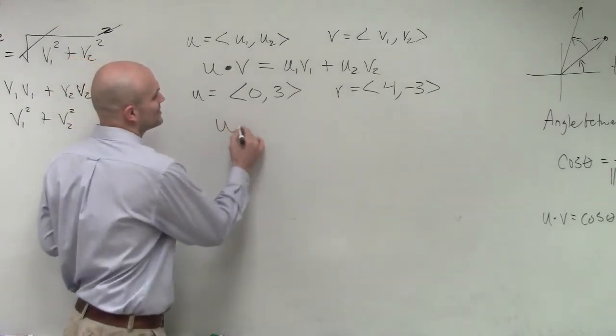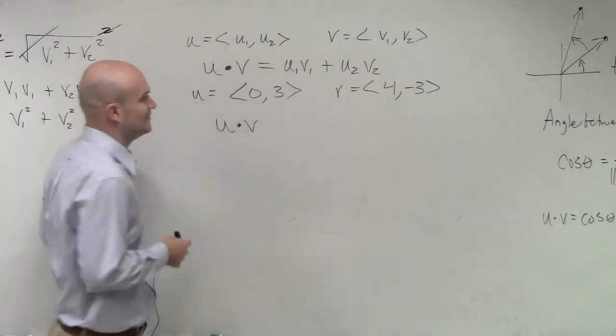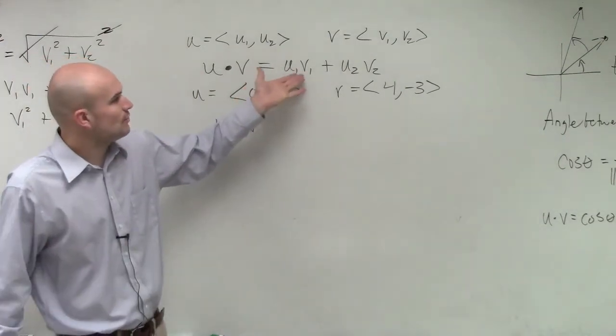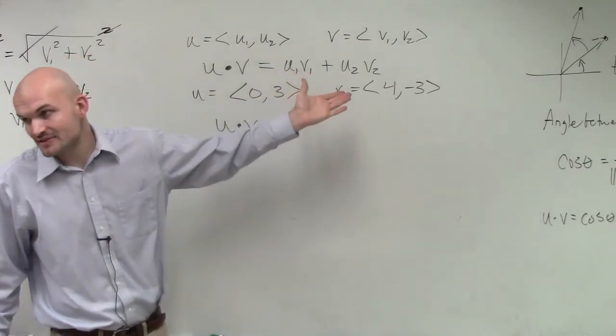So what they're asking us to do is say, what is u dot v? So remember the dot product says u1 v1 plus u2 times v2.